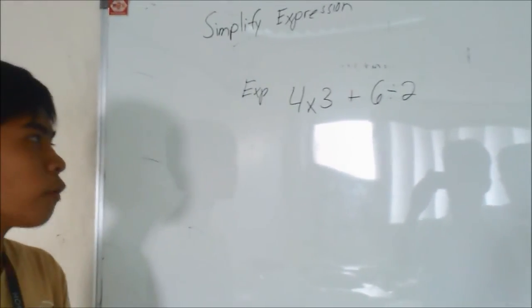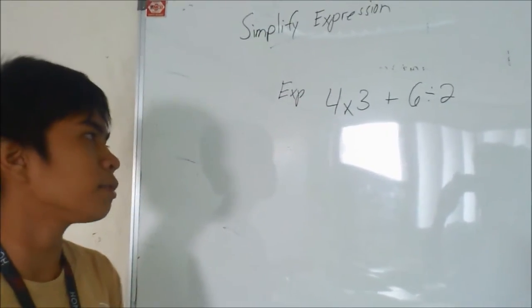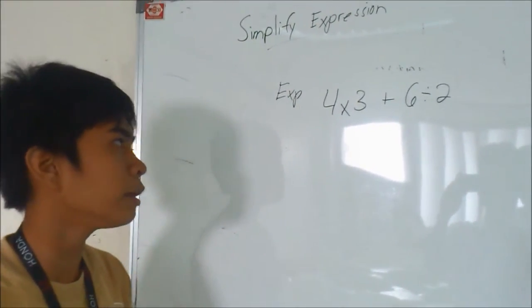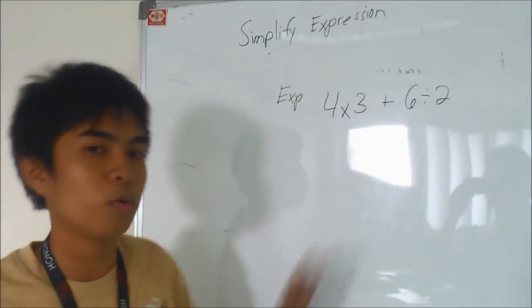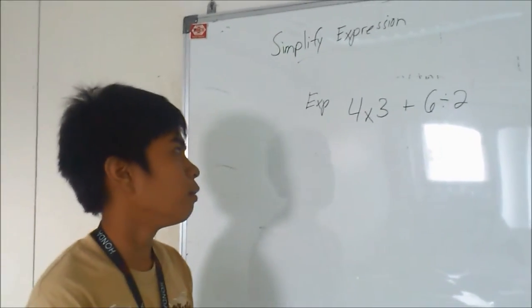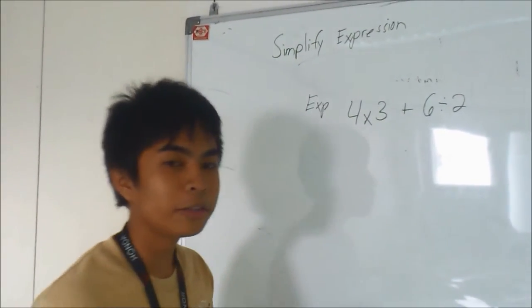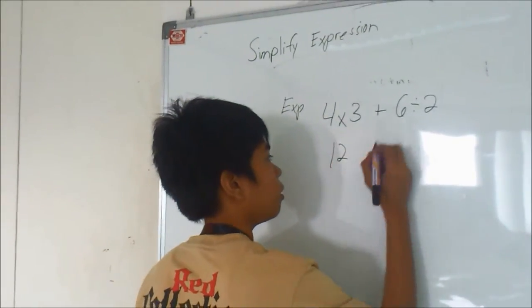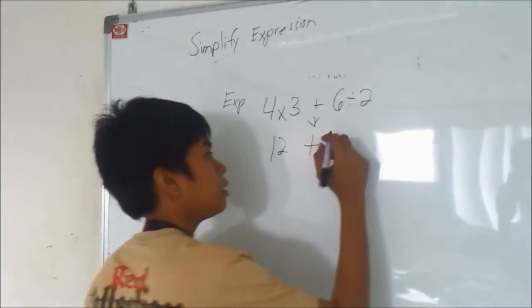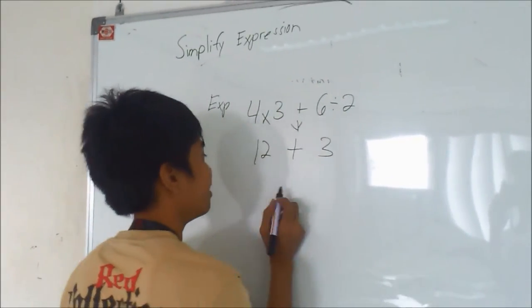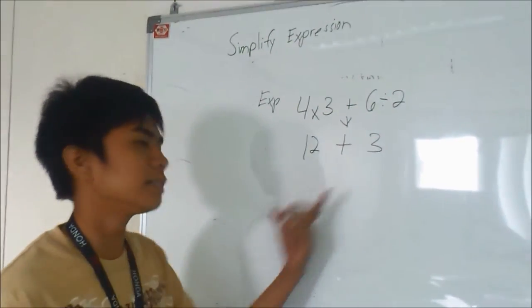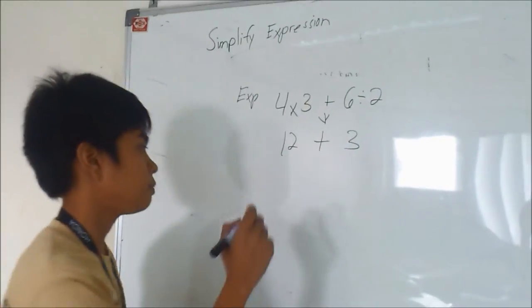Simplify 4 times 3 plus 6 divided by 2. Now, first we multiply 4 and 3 and divide 6 and 2, and then add the answer. What is 4 times 3? 4 times 3 is 12. Plus sign. And 6 divided by 2 is 3. We have 12 plus 3. Compute this and get the answer. 12 plus 3 is 15. This is the answer.